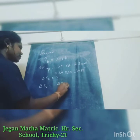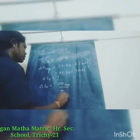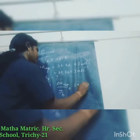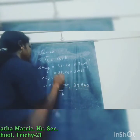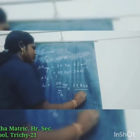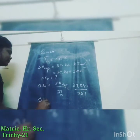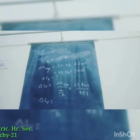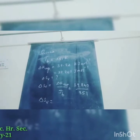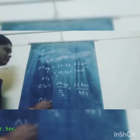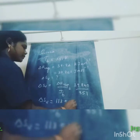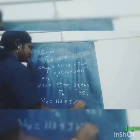ΔH_vapor is 39,840 joule per mole and Tb is 351 Kelvin. So ΔS_v = 39,840 divided by 351, which gives 113.5 joule per Kelvin per mole.